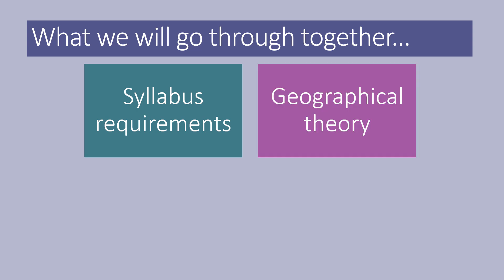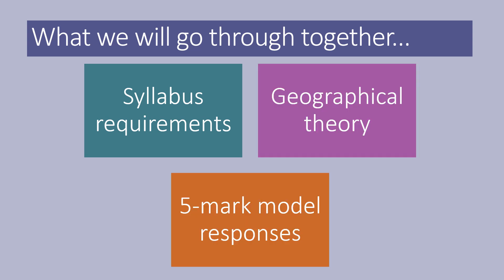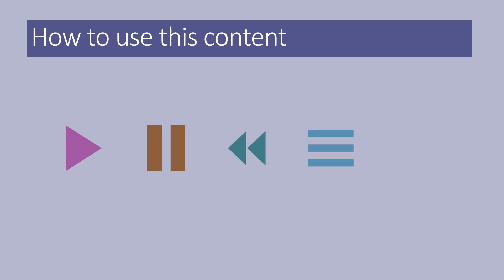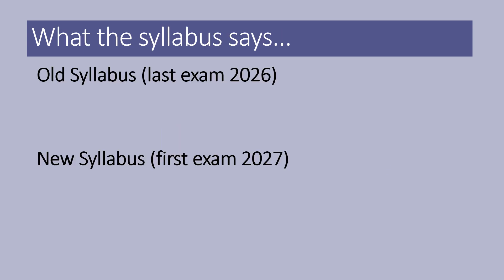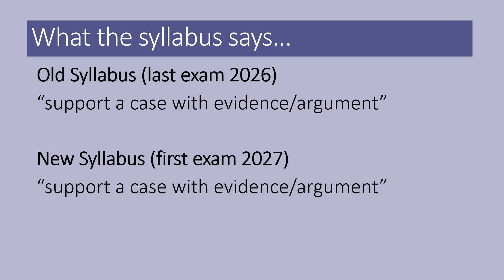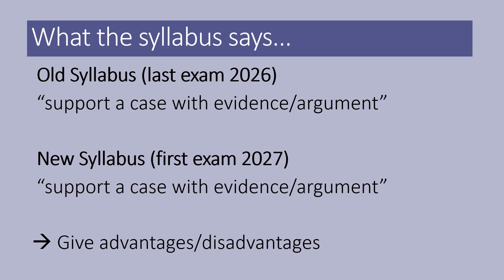We'll go through together the syllabus prompts, touching a little bit on geographical theory and giving you some points to consider when structuring a five mark response. So, what does justify mean? Both the old and new syllabus define it the same way: support a case with evidence and arguments. But what's frustrating is that definition doesn't actually tell you that you need to give both advantages and disadvantages. If you look at the past papers and mark schemes, they expect you to give both.